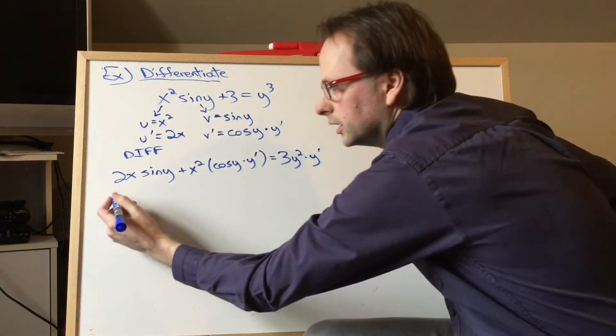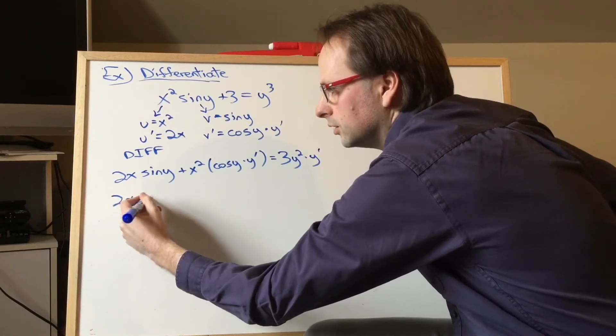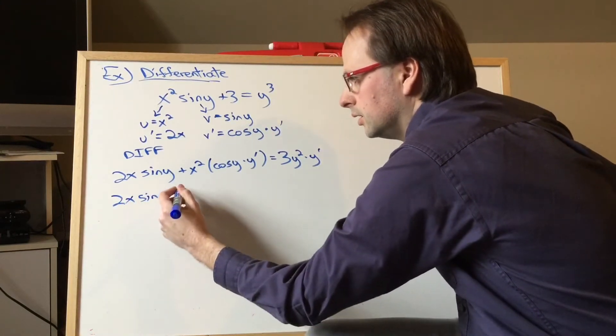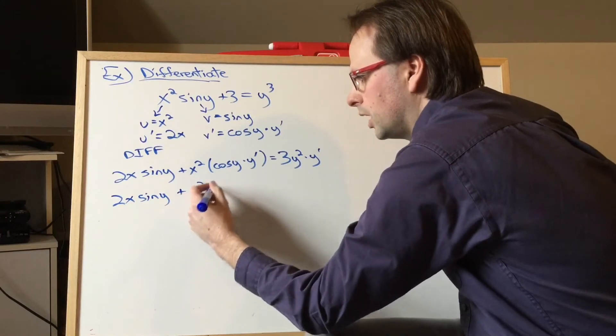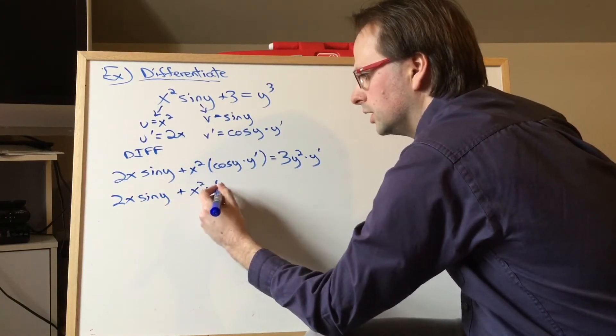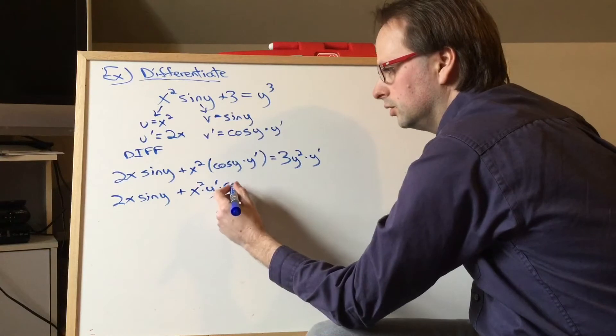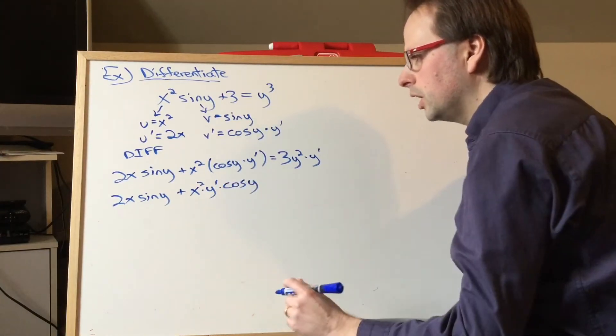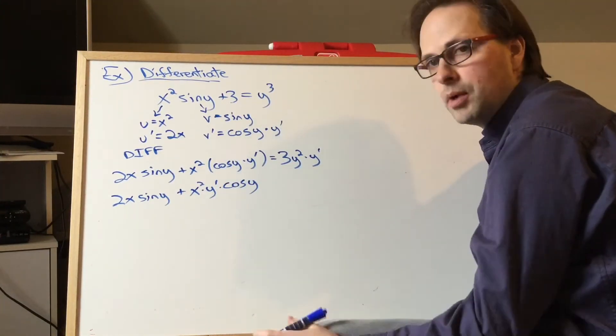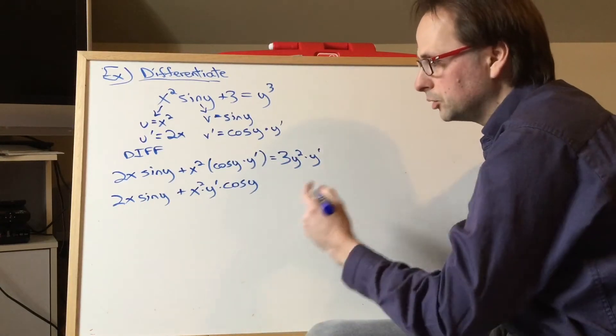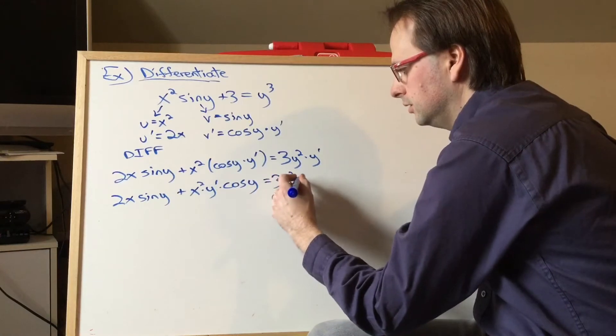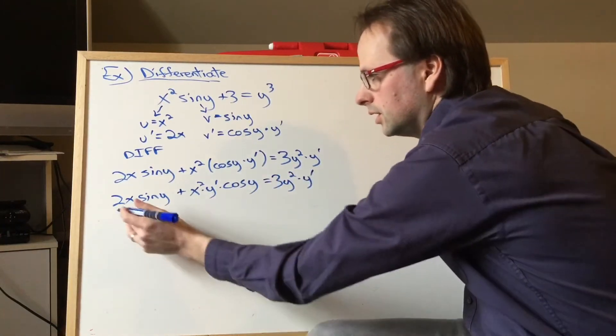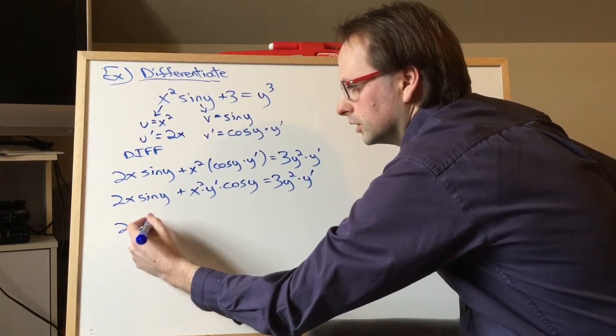Let's just make this look a little nicer. So we have 2x sine y plus x squared. I might put the y prime here just to show that it's not actually in with the angle, times cos y. Alright, and now I want to get my y primes on one side. I'm going to put them on my right hand side. So I still have this. I'm going to leave this 2x sine y over here.